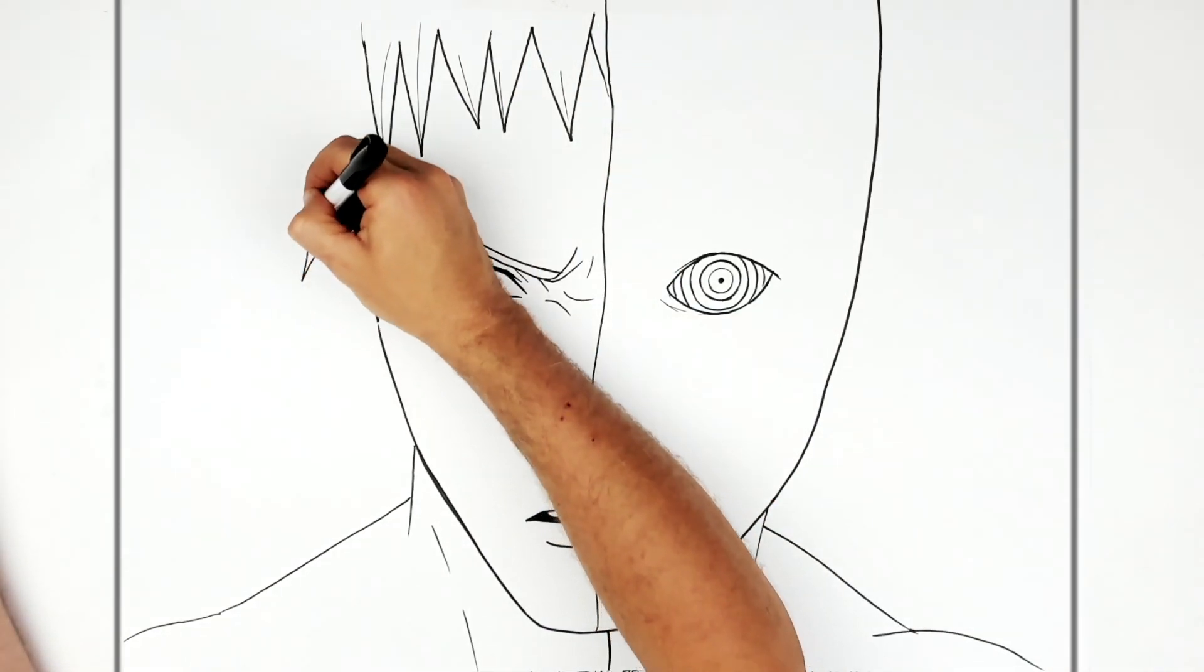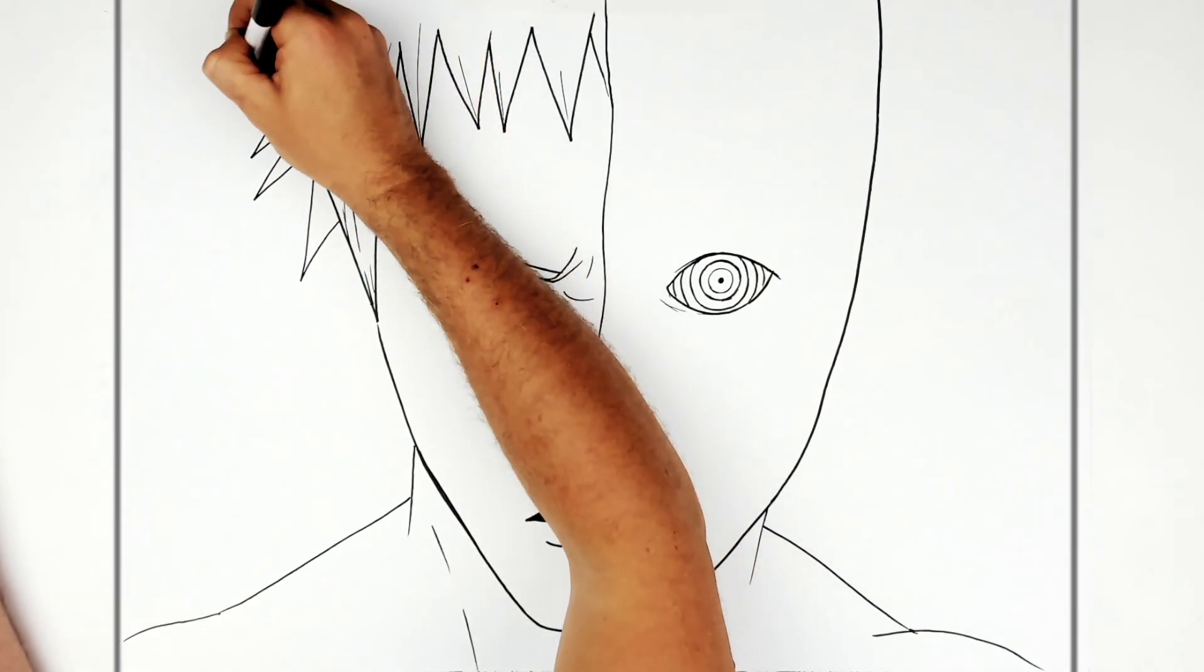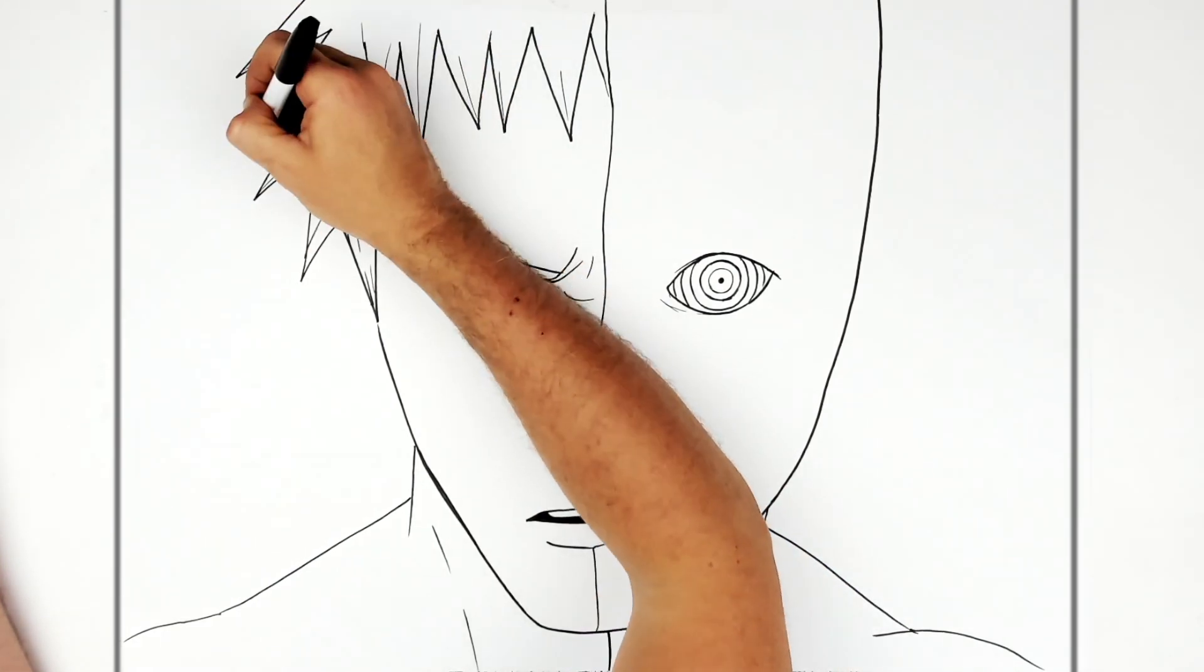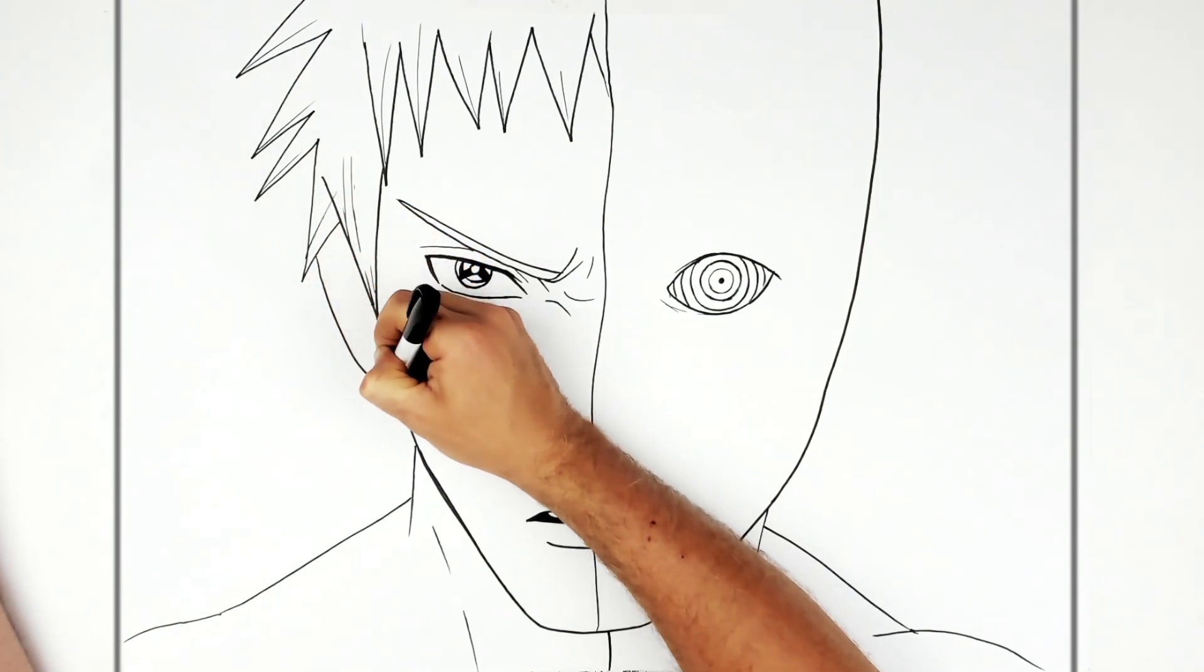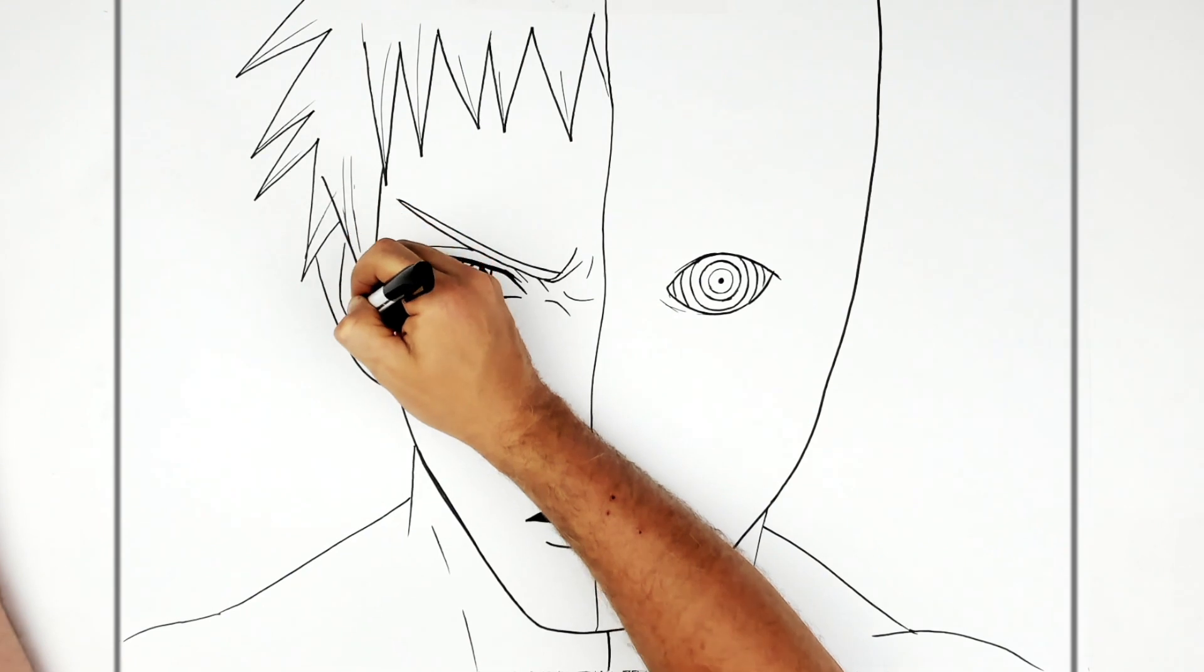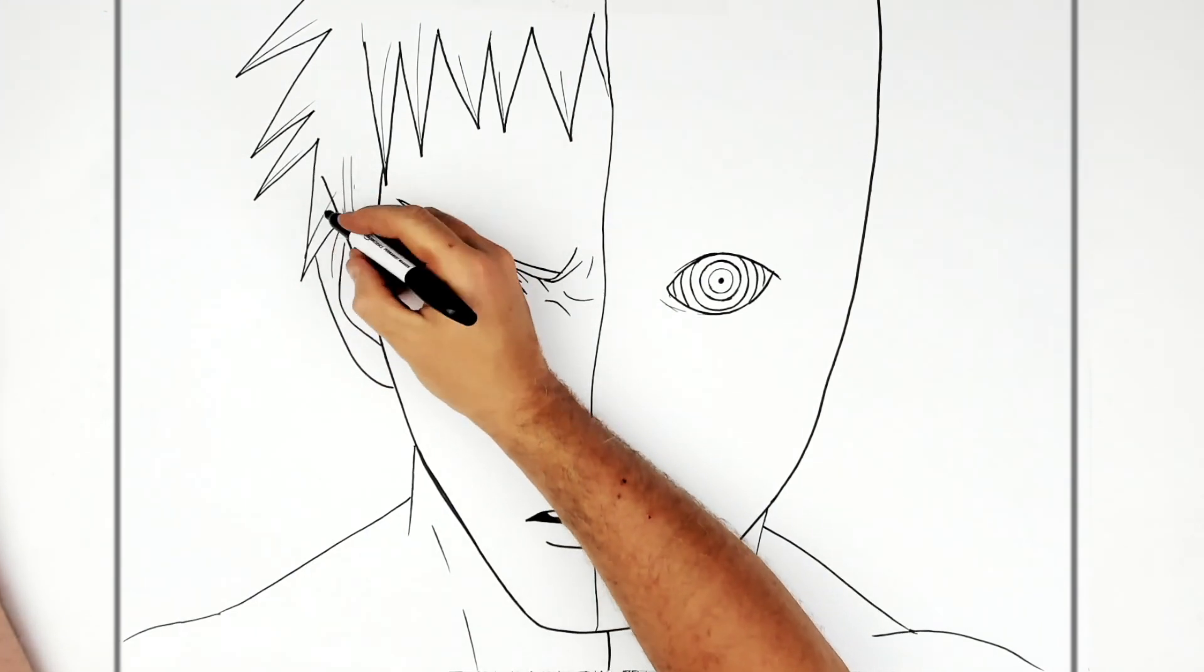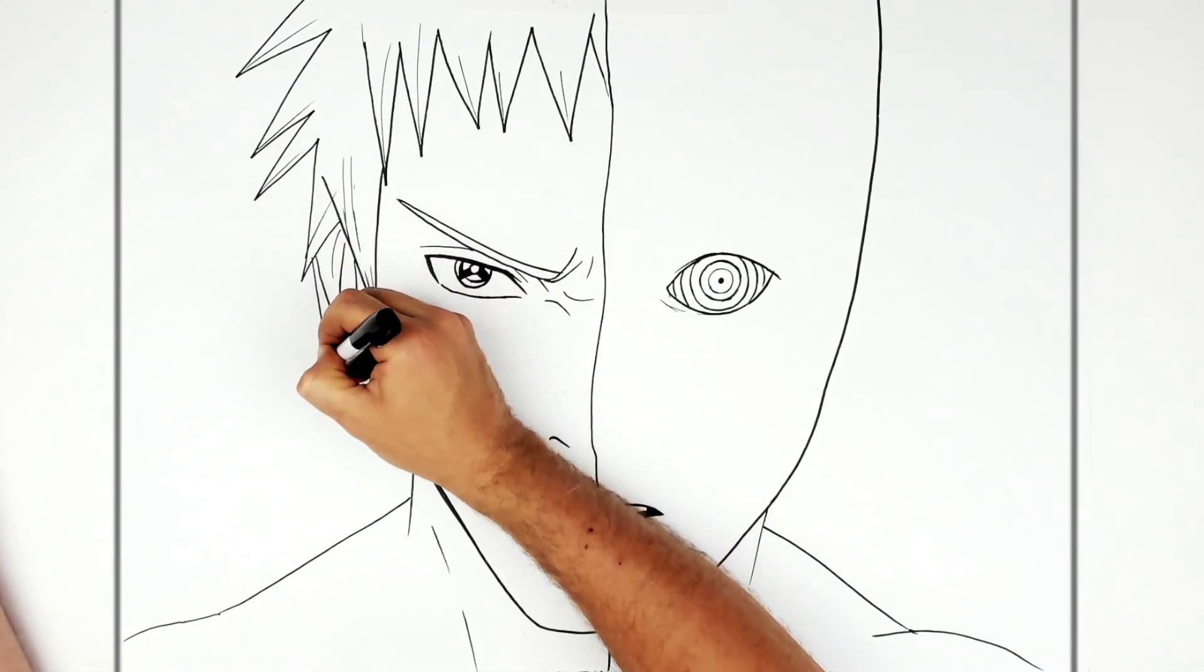And then hair spikes going all this way as well. You can add some texture to them if you want. And then his ear coming down there. Ear lines on the inside. And some hair spikes at the back.